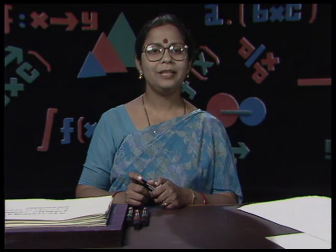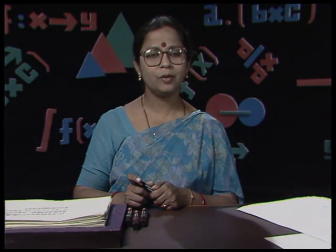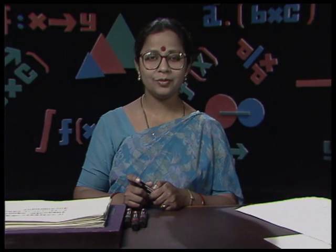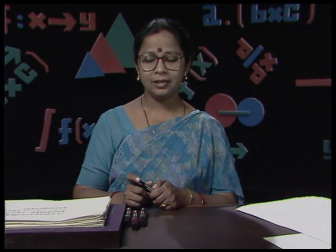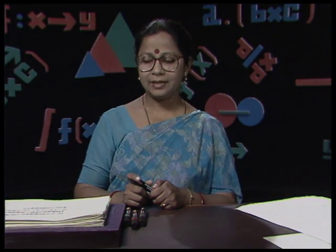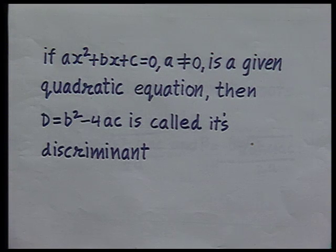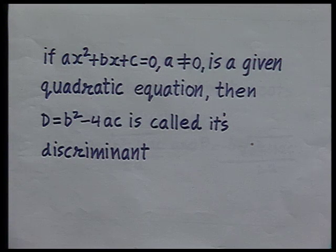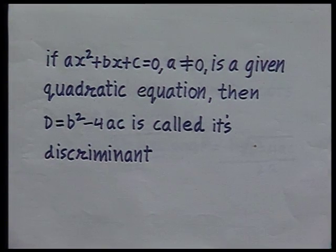Hello viewers. In our previous lesson, we learned certain facts regarding roots of quadratic equations. We learned that if ax² + bx + c = 0, where a ≠ 0 is a given quadratic equation, then D = b² - 4ac is called its discriminant.